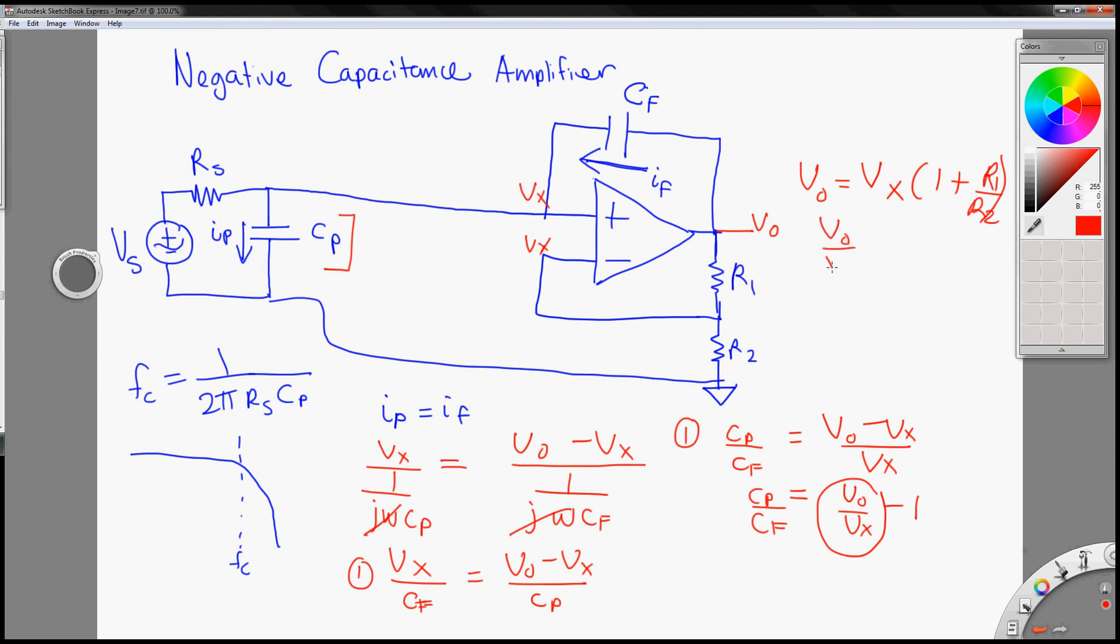But we can just say Vout over Vx is equal to the gain. So Cp over Cf is equal to the gain minus 1.